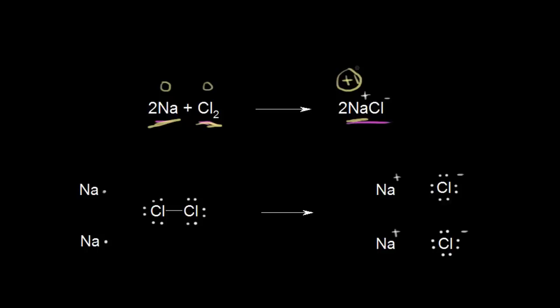I'm going to circle the oxidation state to distinguish it from everything else on the board. For the chloride anion, there is a negative one charge, and therefore the oxidation state is equal to negative one.